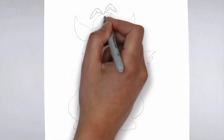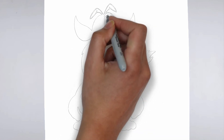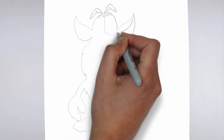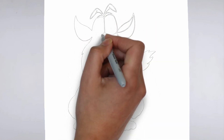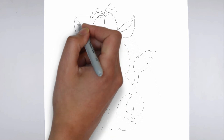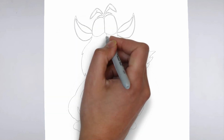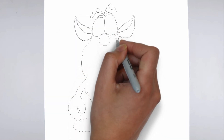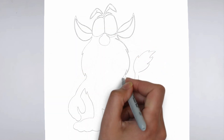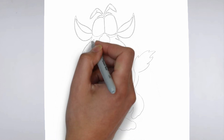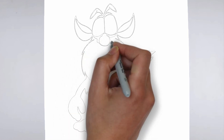Next, we'll start to add some details. Using darker, more defined lines, begin to add in the features of your subject. Pay close attention to the reference image or object you're drawing from, and take your time to get the details just right.